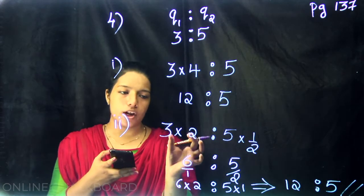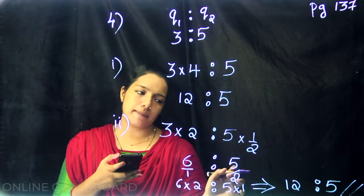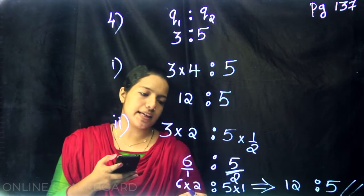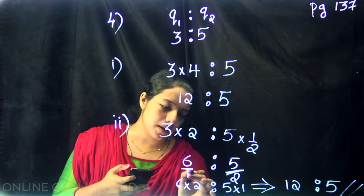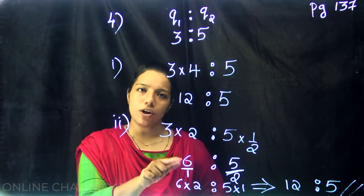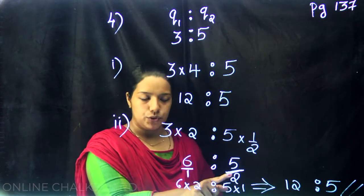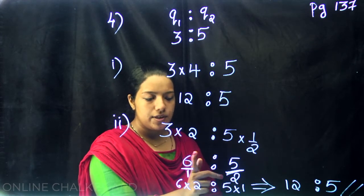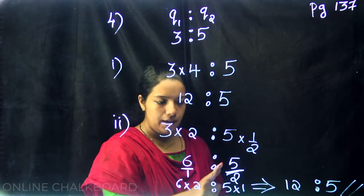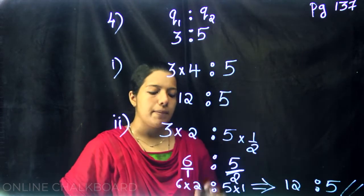For the second part, the smaller is doubled and the larger is halved. We get 6 is to 5 by 2. To simplify, we write 6 by 1 is to 5 by 2 and apply cross multiplication: 6 into 2 is 12, and 5 into 1 is 5. So the ratio is 12 is to 5.